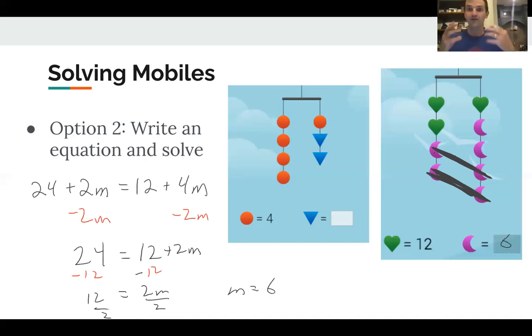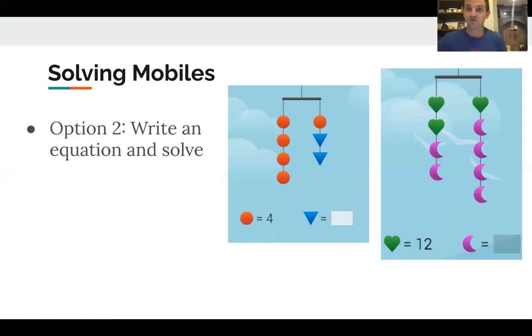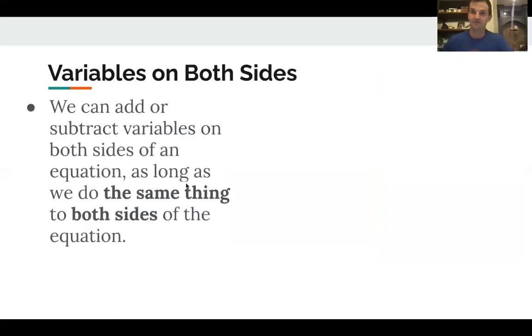And here's where we get to the big idea, is that we're allowed to add numbers to both sides and subtract numbers from both sides. But we're also allowed to add variables or subtract variables from both sides, as long as we do the same thing to both sides. I can't remove two moons and one moon, that's not balanced, but I can remove two moons from both sides, or I could even add another moon to each side. I could add another moon, that would still remain balanced, adding moons to each side, just depending on the situation. So again, just to have that written out, we can add or subtract variables on both sides of an equation, as long as we do the exact same thing to both sides of the equation.